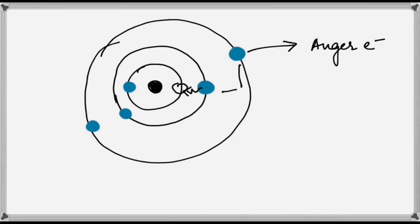This creates two vacancies in the atom, known as a doubly ionized atom. It is represented by three letters XYZ, where X represents the vacant shell which is K, Y represents the shell with the filling electron which is L, and Z represents the shell which emits the Auger electron which is M.